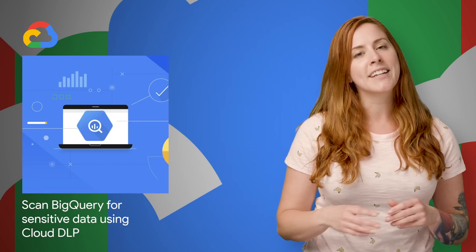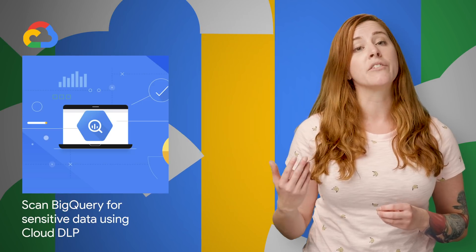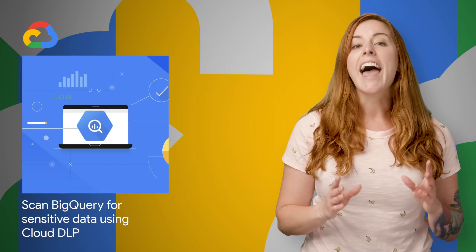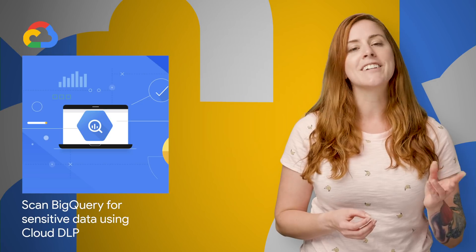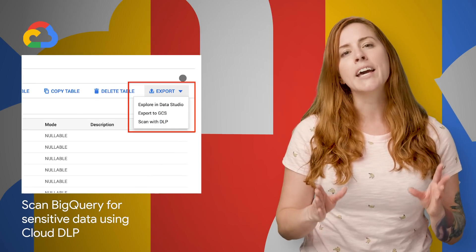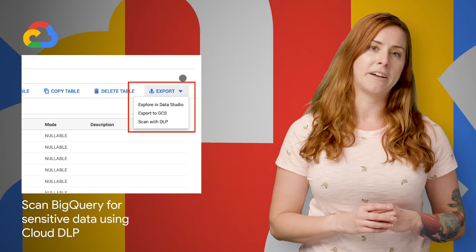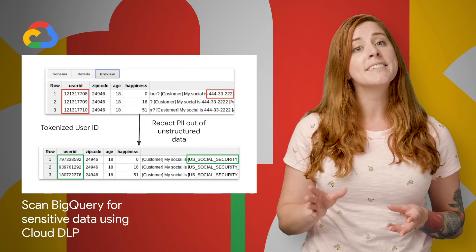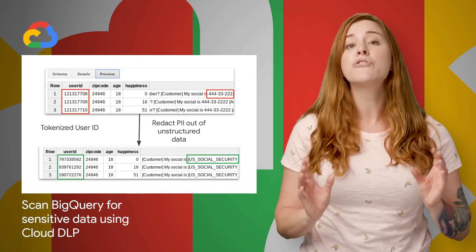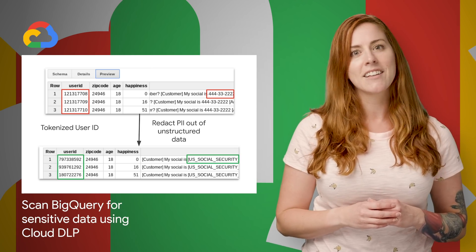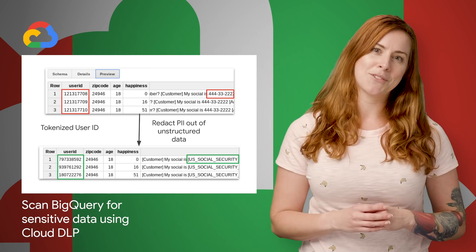Cloud Data Loss Prevention can help protect sensitive data through data discovery, classification, and redaction. And now we're making it easier to discover and classify sensitive data in BigQuery with the Scan with DLP button. This new feature makes it possible to run DLP scans with just a few clicks, directly from the BigQuery UI. Screenshots and links are on the post.